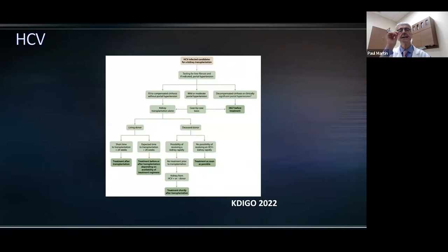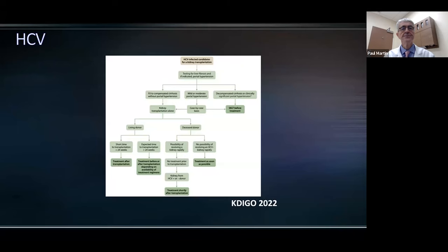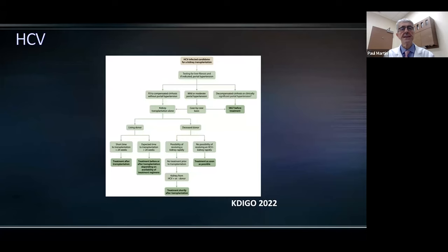This algorithm from our guideline illustrates the management of hepatitis C-infected candidates for a kidney transplant. We determine the severity of liver disease. If they are candidates for an isolated renal transplant, we suggest different parts of the algorithm according to whether they have a living donor or a deceased donor. Treatment timing is tailored to the expected time of transplant and whether the patient receiving a deceased donor is likely to receive a hepatitis C-infected organ.